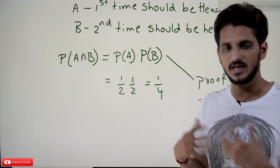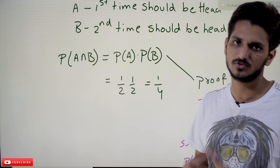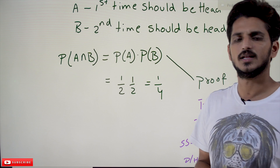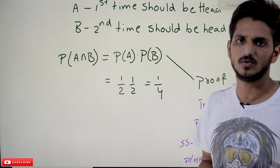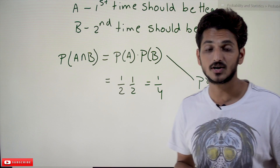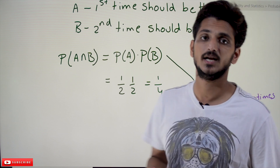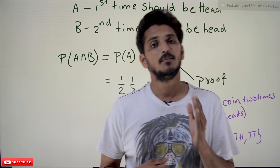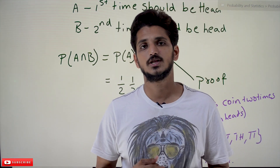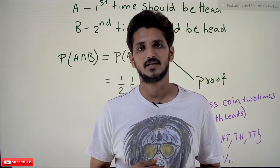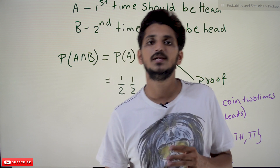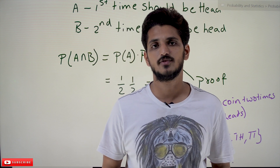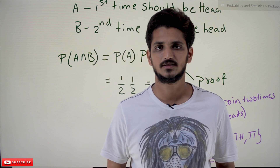After that we are going to do many examples based on conditional probability. Hope you understand the concept of dependent and independent events. If you have any questions regarding the concept, please post your questions in the comment section below. Thanks for watching — if you haven't subscribed to our channel, please subscribe and press the bell icon for the latest updates. Thank you.